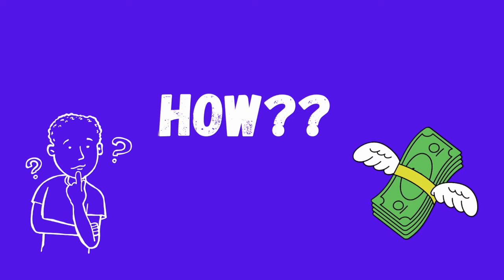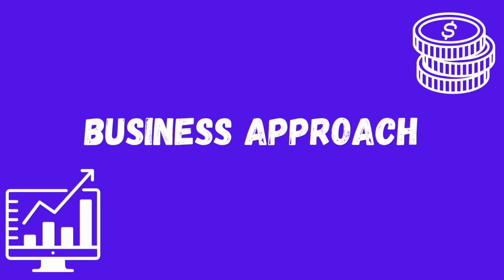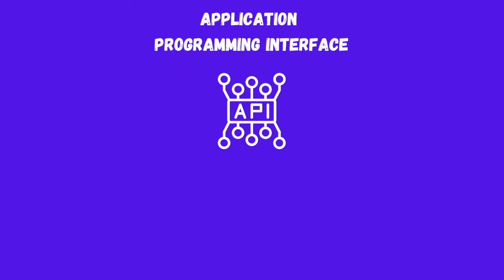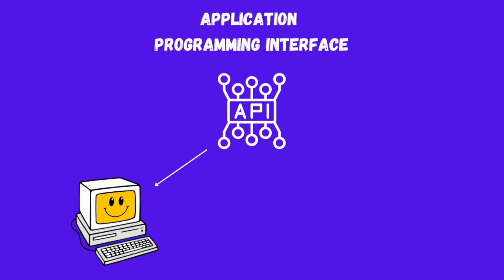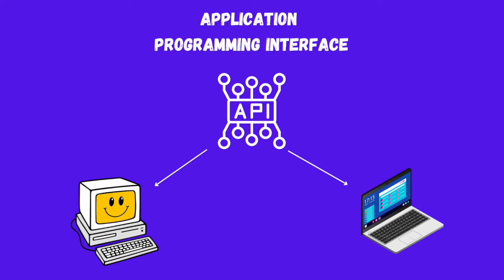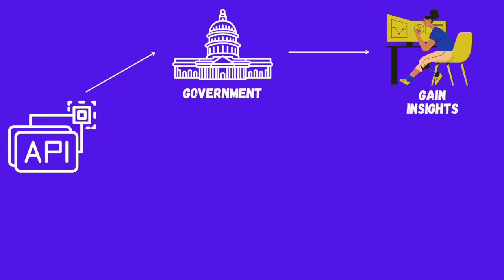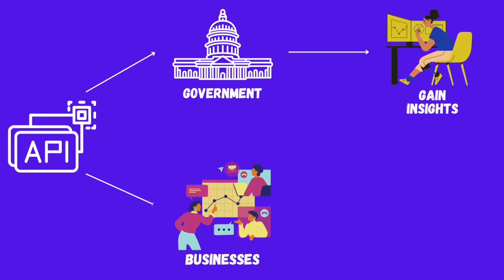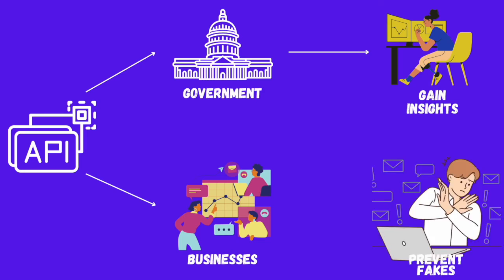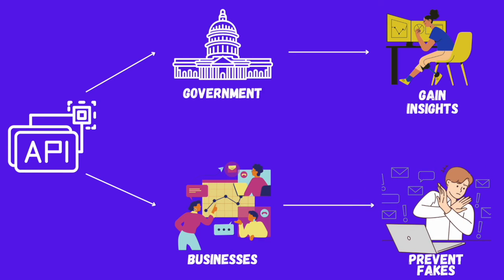Now let's talk about the business aspects of our solution. First, we will be creating an API of our model which can be easily integrated with both existing and new software. We have two major approaches with our API. First, we will be working with the government — with the help of our API, they can easily get insights about the rise in fake accounts in a particular area and track surges from specific regions. Second, we will be working with businesses that have login through Instagram or Facebook, providing them with our API so they can prevent people using fake accounts from accessing their app.